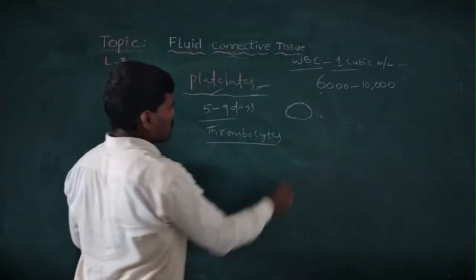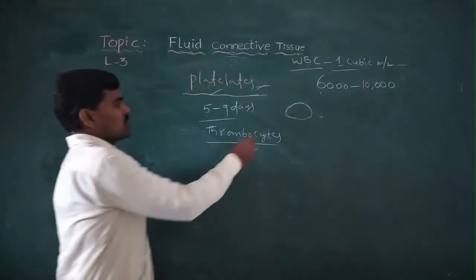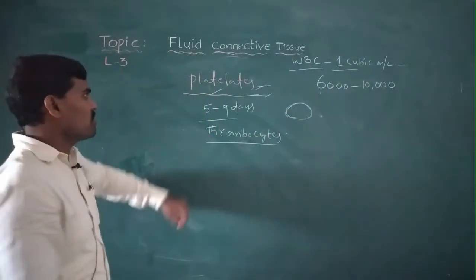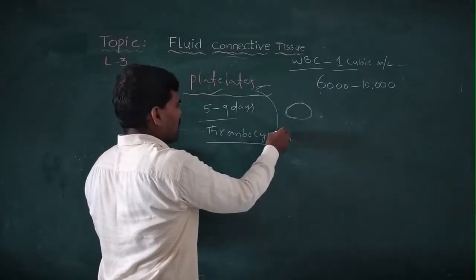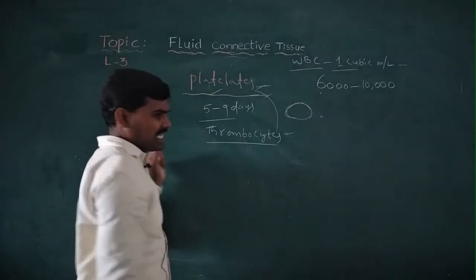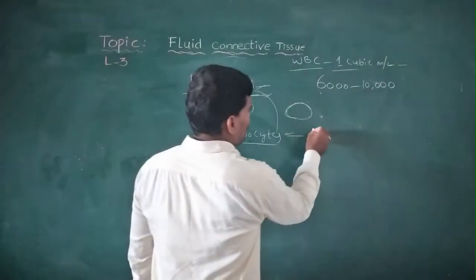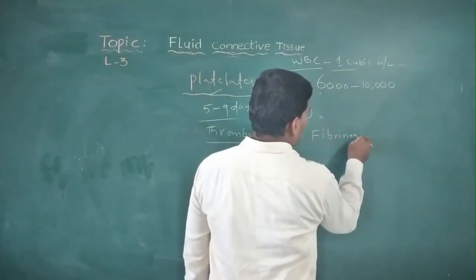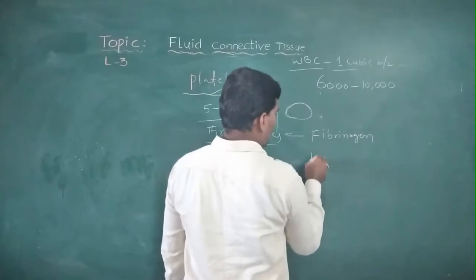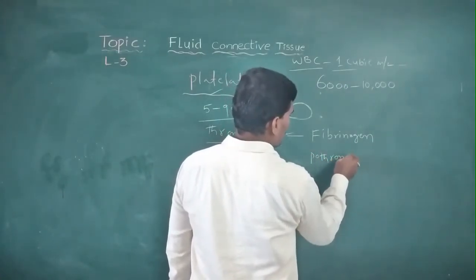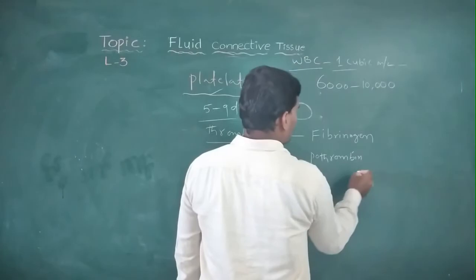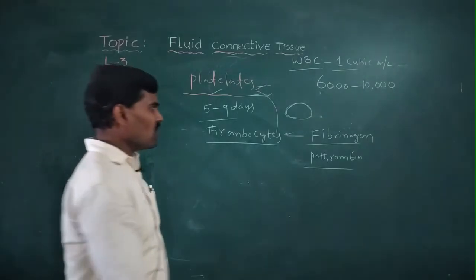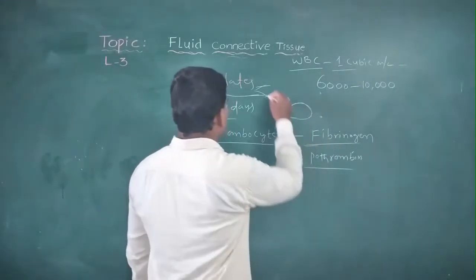Thrombocytes: whenever any injuries form in our bodies, the platelets release fibrin and thrombin along with anticoagulant substances to help close the wound.